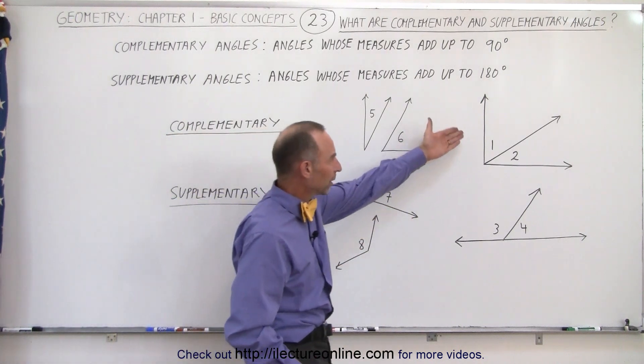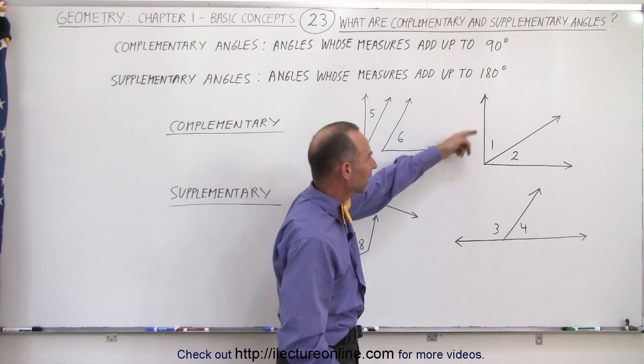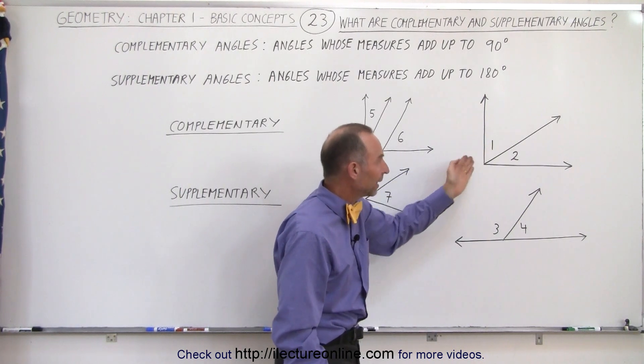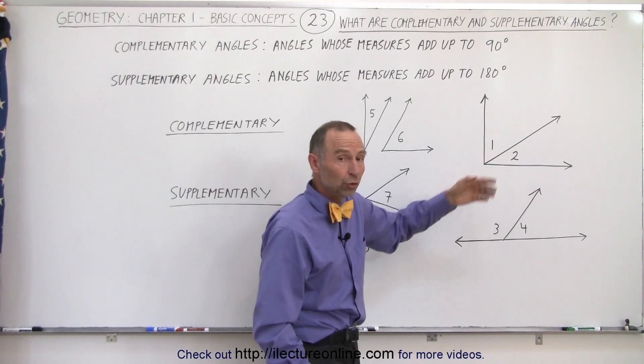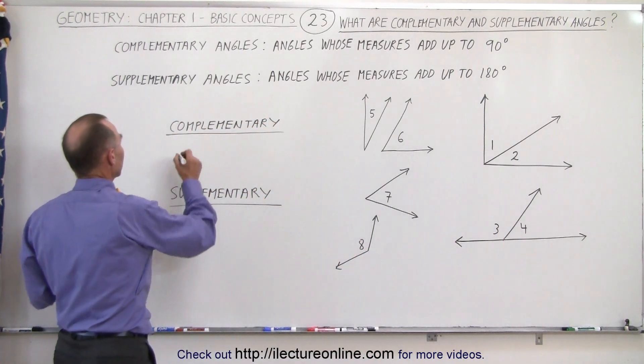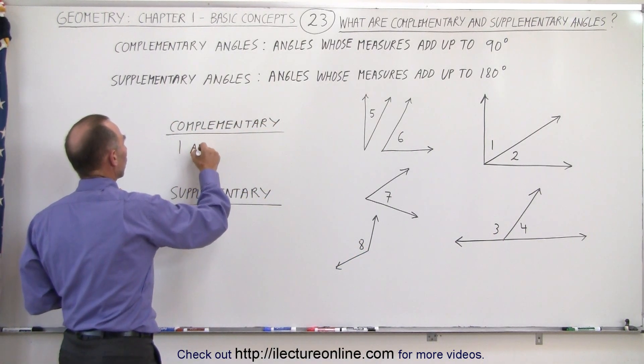And typically we see it illustrated like this. Here it's clear that angles 1 and 2, the measures of these two angles, add up to 90 degrees, so angles 1 and 2 are considered complementary angles. So here we can say 1 and 2.